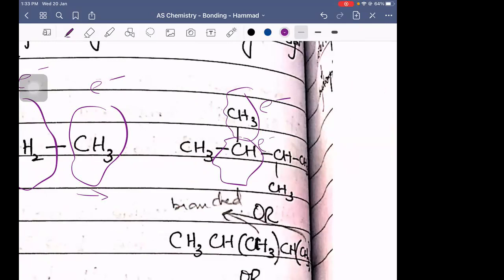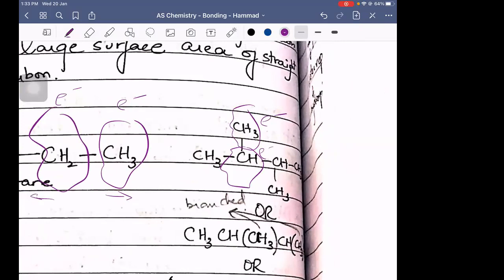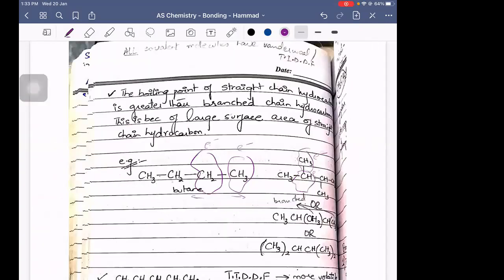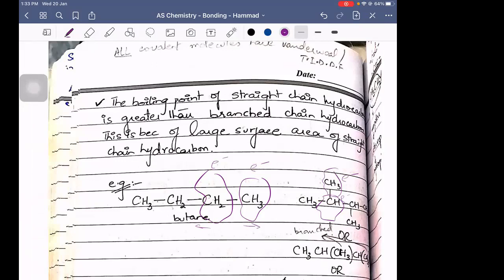So it starts to get a repulsion in the molecule. There's already repulsion. You provide a small amount of heat, it tends to break apart. And that is the reason why the boiling point of a branched chain will always be less than a straight chain for the same number of carbon atoms.